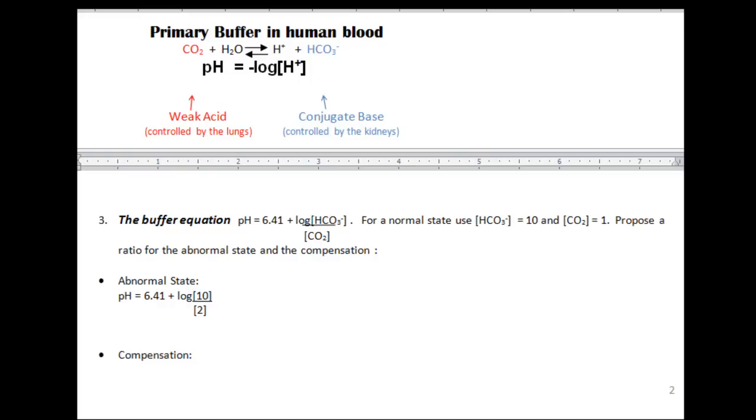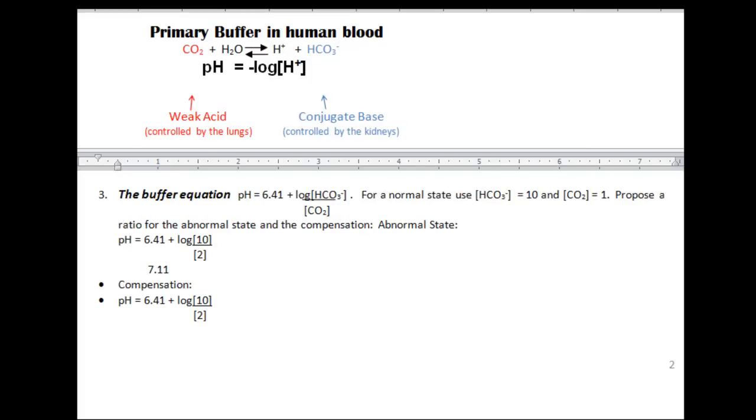But 2 is a good enough number, because when you calculate the pH using 10 over 2, you'll calculate a pH of 7.11, which is too acidic. As we said before, the kidneys will compensate by increasing the bicarb.